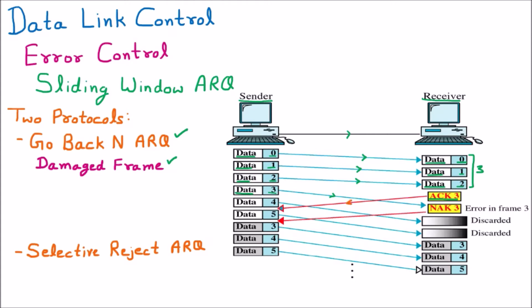The receiver initiates acknowledgement for those three packets and sends the reply. The reply is received by the sender when it has already sent four packets, because the sender is sending multiple packets at a time. Now, packet number 3 was reaching the destination, but there was an error in that packet — an error in frame number 3. So when that frame reached the destination, the receiver initiated a NAK (negative acknowledgement) for packet 3.